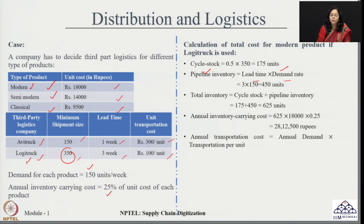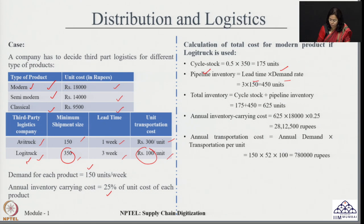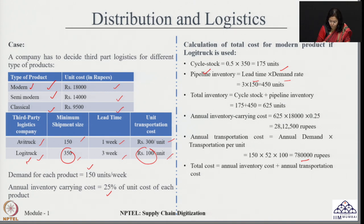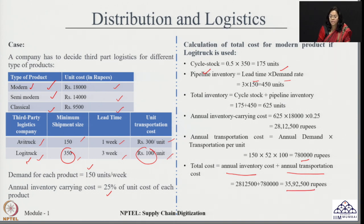The total transportation cost is calculated as annual demand multiplied by transportation cost per unit: 150 units per week × 52 weeks × rupees 100 per unit. The total cost is the combination of annual inventory cost and annual transportation cost, coming to around rupees 35,92,500 as the final solution for logitruck with the modern product.